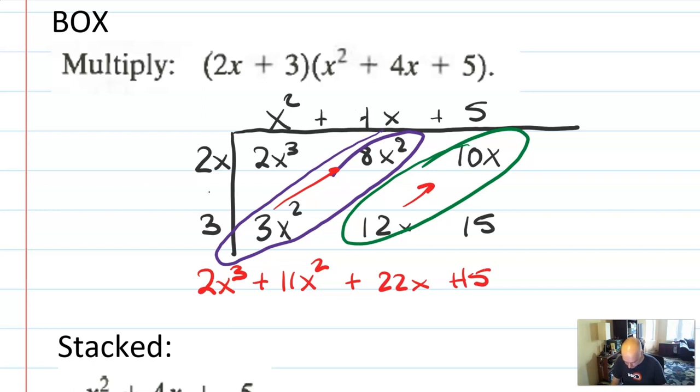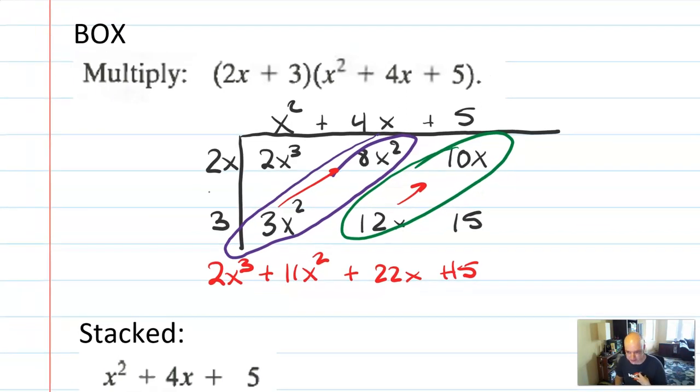That makes it really easy to combine like terms. So we have 2x cubed, then I easily see 8 plus 3 is 11, easily see 12 plus 10. So that's using the box method. The diagonals only work if you're not missing any terms, right? So if I was missing that x term, it wouldn't quite line up. But it would still be organized in a nice way. So I like the box method too.